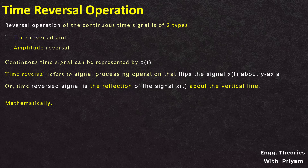Mathematically it can be shown as y(t) = x(kt) where k = -1, or we can write y(t) = x(-t). This is one type of time scaling operation where the signal x(t) is scaled by a value of minus 1.